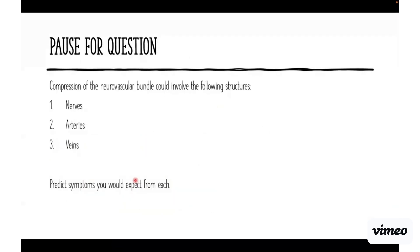Before we get started, I want to ask a question so we can pause this. I want you to predict what symptoms you would get from compression of the neurovascular bundle—each individual component: the nerves, arteries, and veins. What would you expect from compression of nerves, arteries, and veins?